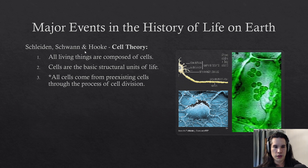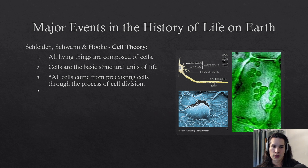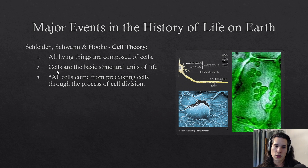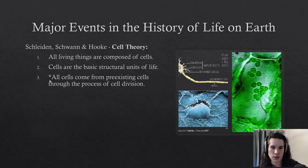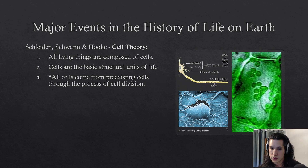Now let's talk about cell theory. Schleiden, Schwann, and Hooke all contributed to cell theory, which is composed of three tenets. First, all living things are composed of cells — debated but generally accepted. Second, cells are the basic structural units of life — also generally accepted. Third, all cells come from pre-existing cells through the process of cell division. This third tenet has recently been challenged, as within the last decade or two researchers have been able to take cellular subcomponents and splice them together to create a living cell — not through cell division, but by adding subcomponents together.